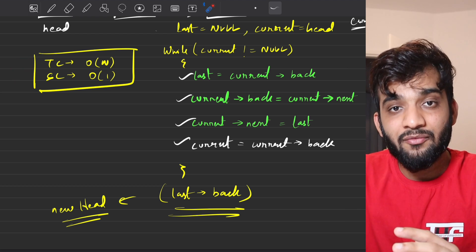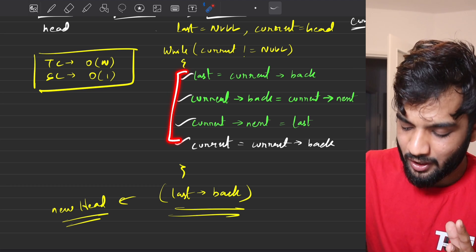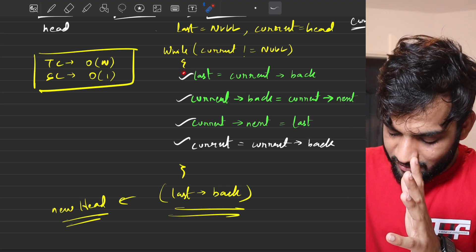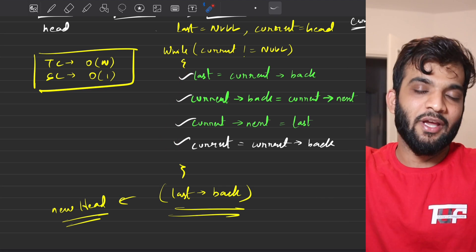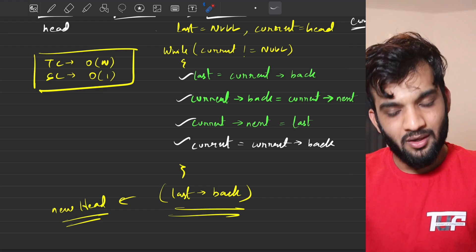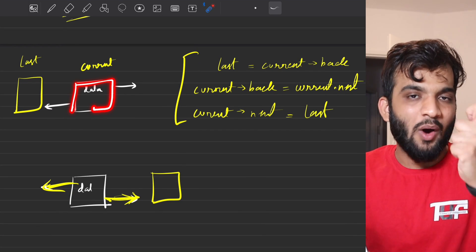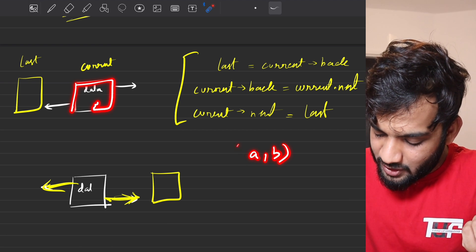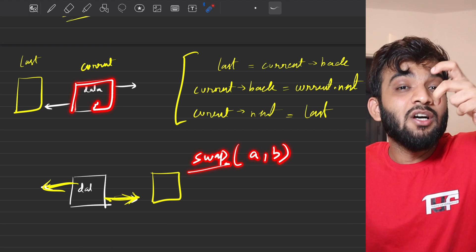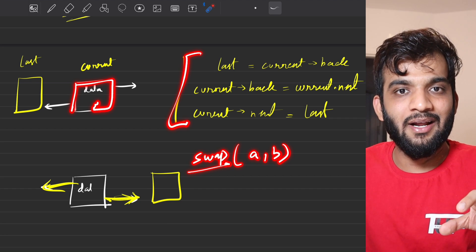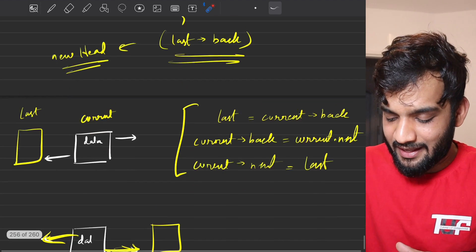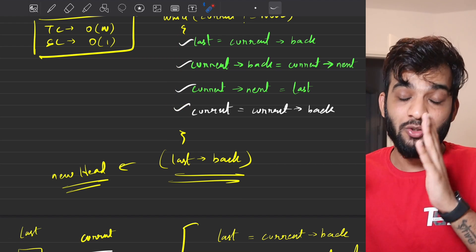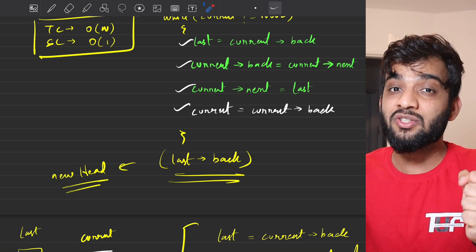One important interview tip: do not just write these four lines and do a dry run. Tell the interviewer your full thought process — that you considered one node, then thought about swapping links, then derived the need for a third variable from the A-B swap analogy. The interviewer wants to see your intuition and reasoning, not just the final lines.